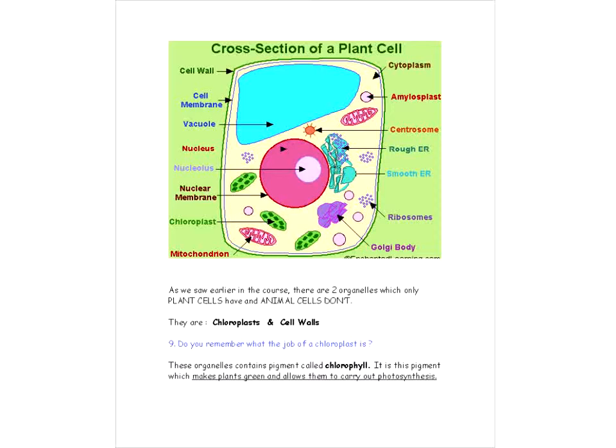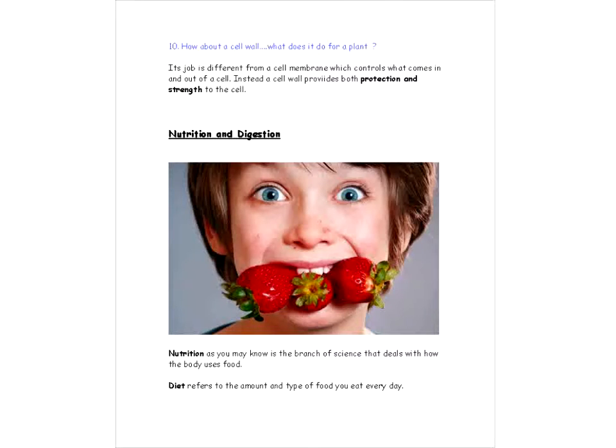So moving on, here we see the cross-section of a plant cell. Just a few differences. So there are two organelles which are found only in plant cells which animal cells don't have. What are they again? Those are chloroplasts and cell walls. So you guys remember what the job of a chloroplast is? Well these organelles contain the pigment called chlorophyll. And it's this pigment which makes plants green and allows them to carry out photosynthesis. Now how about a cell wall? What does it do for a plant? Again its job is different from a cell membrane which controls what comes in and out of the cell. Instead a cell wall provides both protection and strength to the cell.